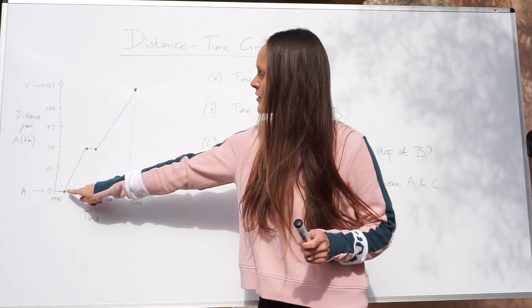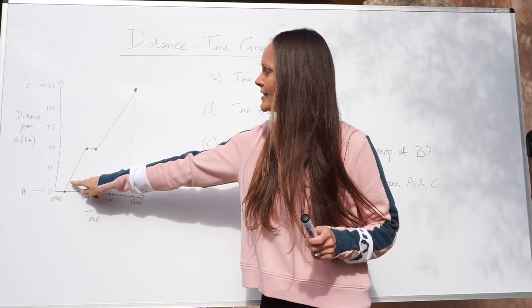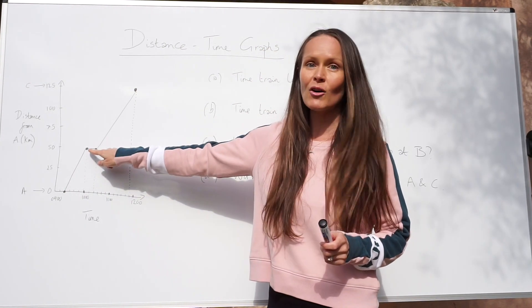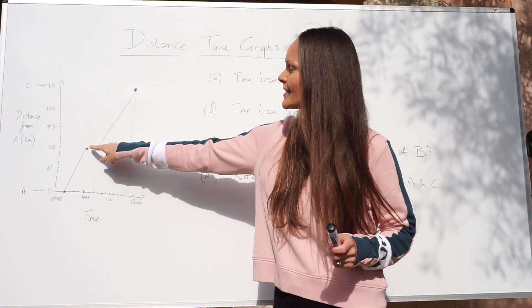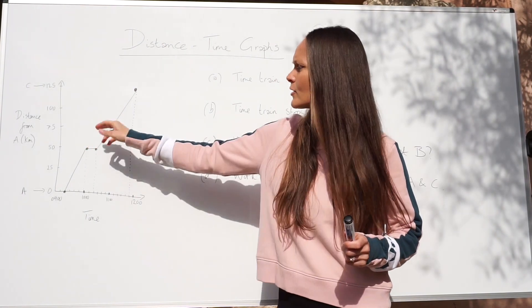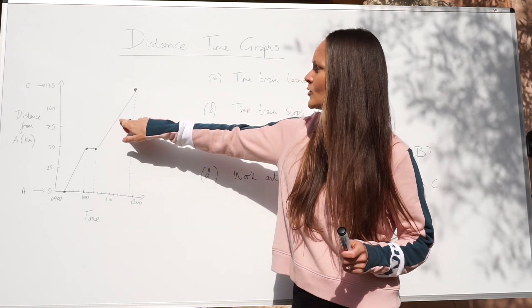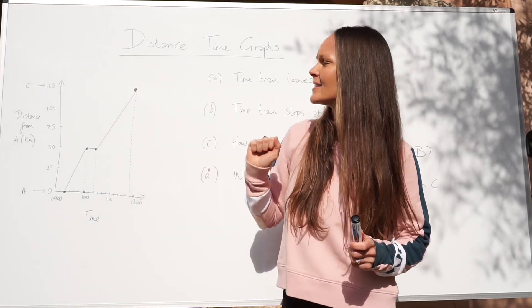You can see the train is moving here because the distance from A is increasing. Then we have a horizontal line which means the train has stopped, it's stationary, the distance isn't increasing anymore and then the train continues on its journey and it arrives at C.